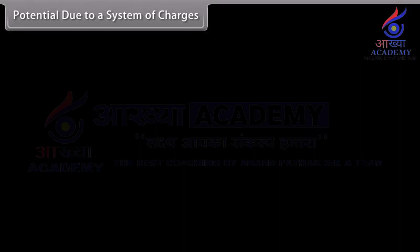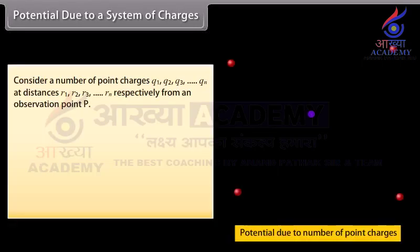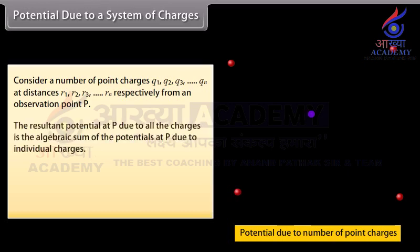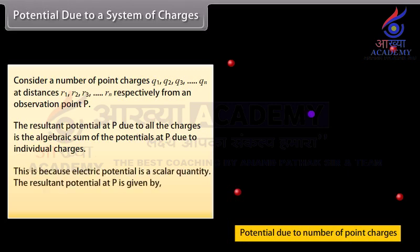Potential due to a system of charges: Consider point charges Q₁, Q₂, Q₃, and so on till Qₙ at distances R₁, R₂, R₃, and so on till Rₙ from a point of observation P. The resultant potential at P due to all charges is the algebraic sum of the potentials at P due to individual charges, because electric potential is a scalar quantity. The resultant potential at P is V equals V₁ plus V₂ plus V₃ and so on till Vₙ.